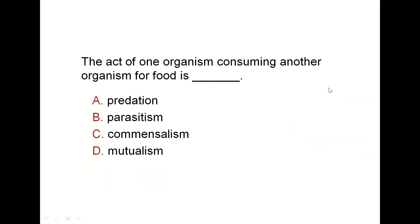Question number one: the act of one organism consuming another organism. Consuming is the keyword — it means one organism feeds on, hunts, and eats the other. This means predation. Predation is a food relationship between two organisms — one is a predator and the other is a prey. Parasitism is also a food relationship where one organism gets benefit and the other gets harm. So the answer is predation.